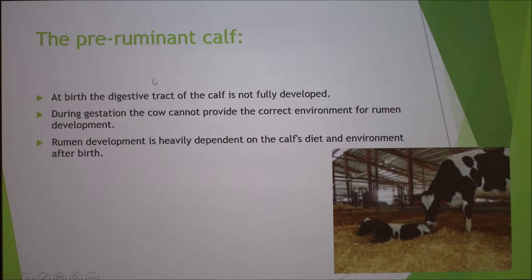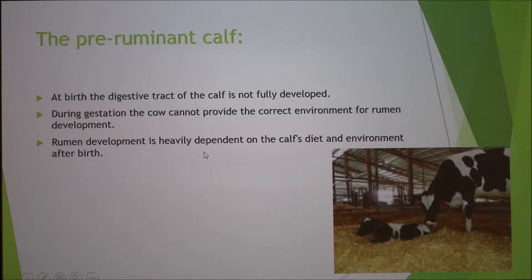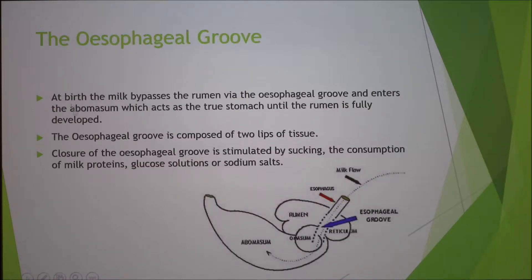In the pre-ruminant calf, the digestive tract is not fully developed. This is due to the fact that during gestation, the cow can't provide the correct environment for the rumen to develop. The development of the rumen is dependent on the calf's diet and the environment after birth. At birth, the milk bypasses the rumen via the esophageal groove and enters the abomasum, which acts as the true stomach until the rumen is developed.